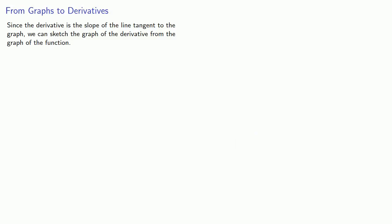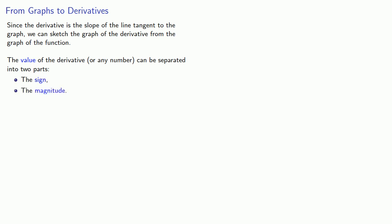Since the derivative is the slope of the line tangent to the graph, we can sketch the graph of the derivative from the graph of the function. It helps if we consider the following: the value of the derivative, or any number, can be separated into two parts — the sign, positive or negative, and the magnitude. To avoid getting lost in the details, we'll focus on the sign first.